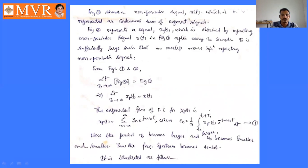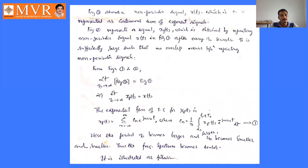The exponential Fourier series of xp(t) is: xp(t) = Σ cₙ e^(jnω₀t), where the Fourier coefficient cₙ = (1/T₀)∫xp(t)e^(−jnω₀t)dt. Let us call this equation one. As T₀ becomes larger and larger, ω₀ = 2π/T₀ becomes smaller and smaller, so fₙ = 1/T₀ also becomes smaller and smaller, and ω₀ decreases accordingly.